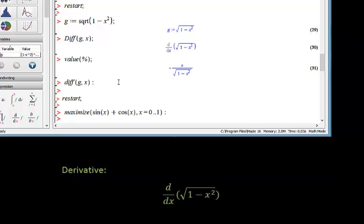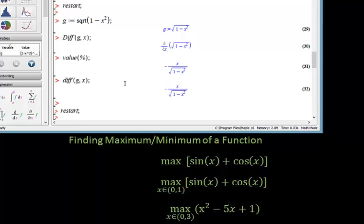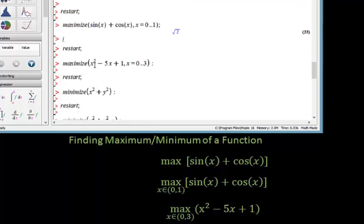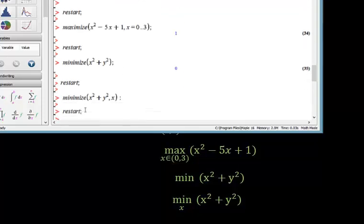Let's now look at finding the maximum minimum of the functions. In this case I can use the maximize command and minimize command. I'm going to do maximize sine of x plus cosine of x at the range of x between 0 to 1. In the other example I'm going to maximize x² - 5x + 1, the range of x 0 to 3. I can find the minimization functions, even multi-variable functions, even with respect to one of the variables.